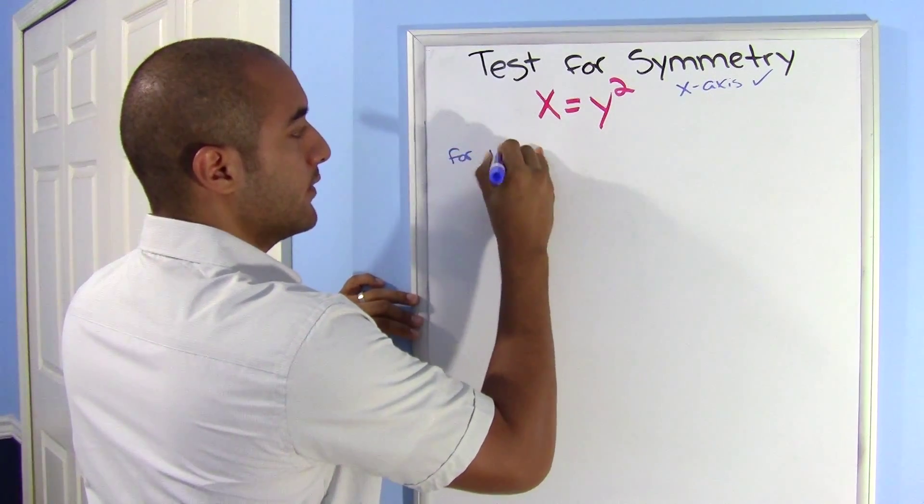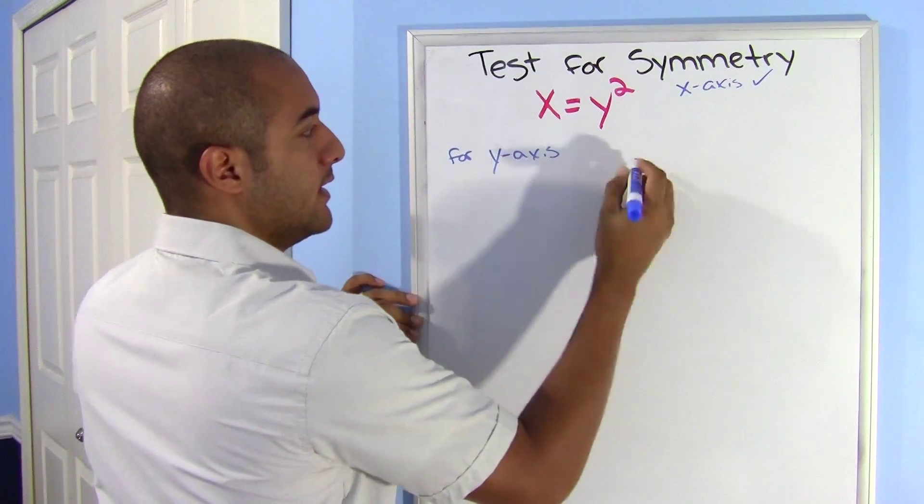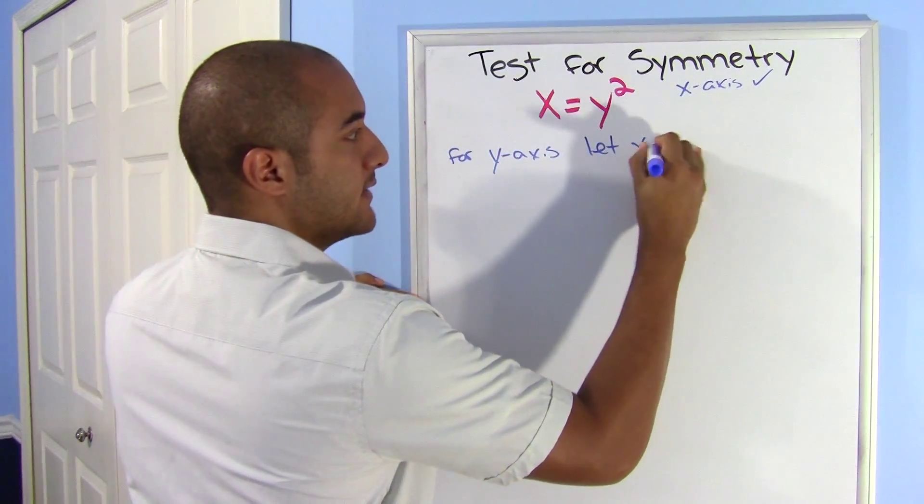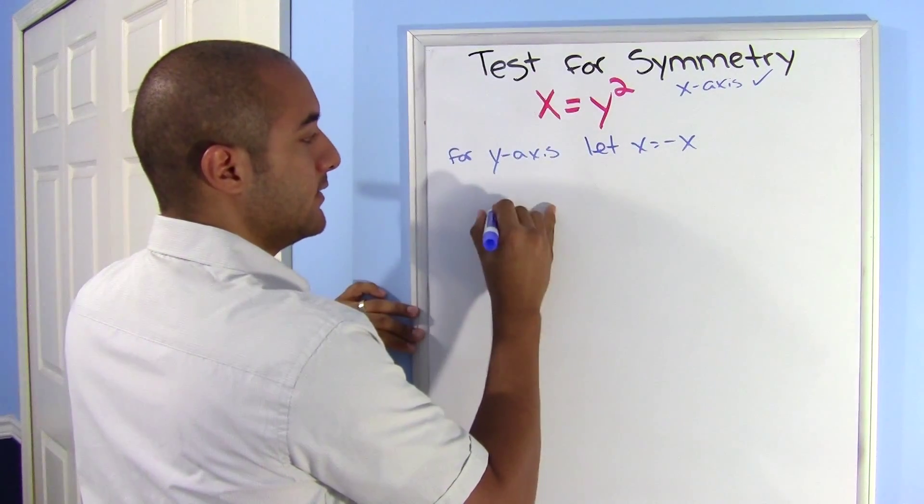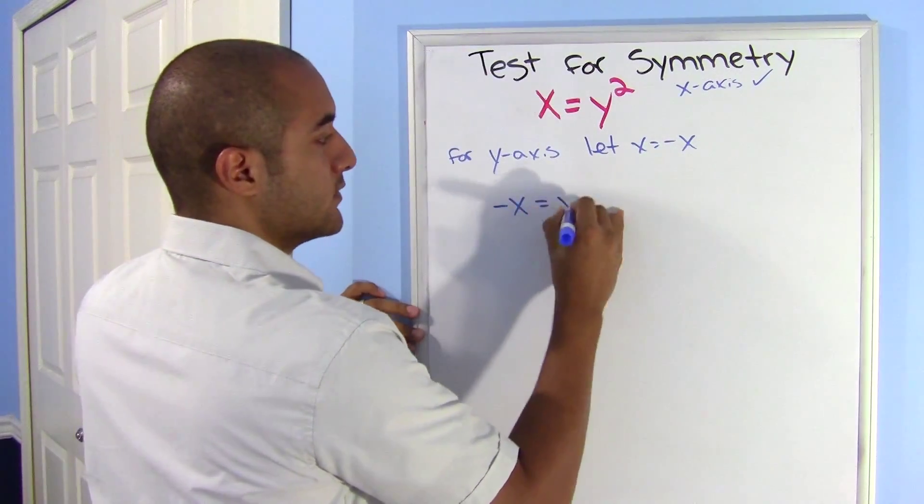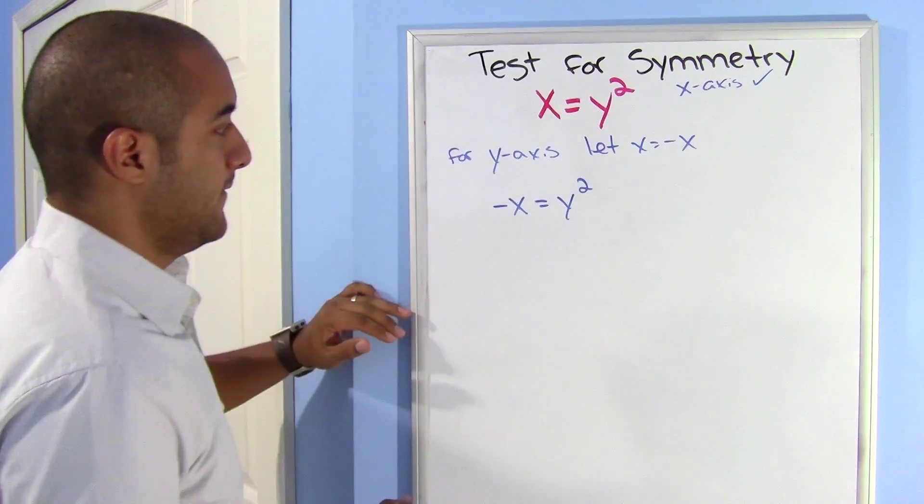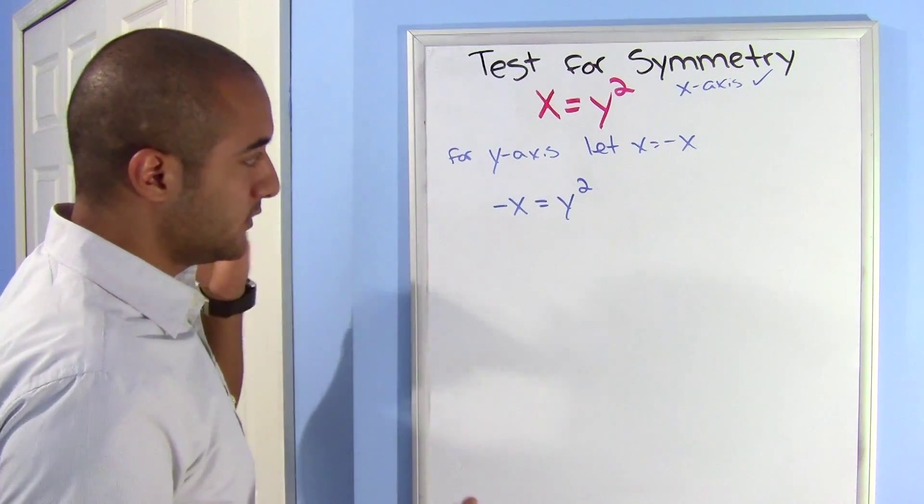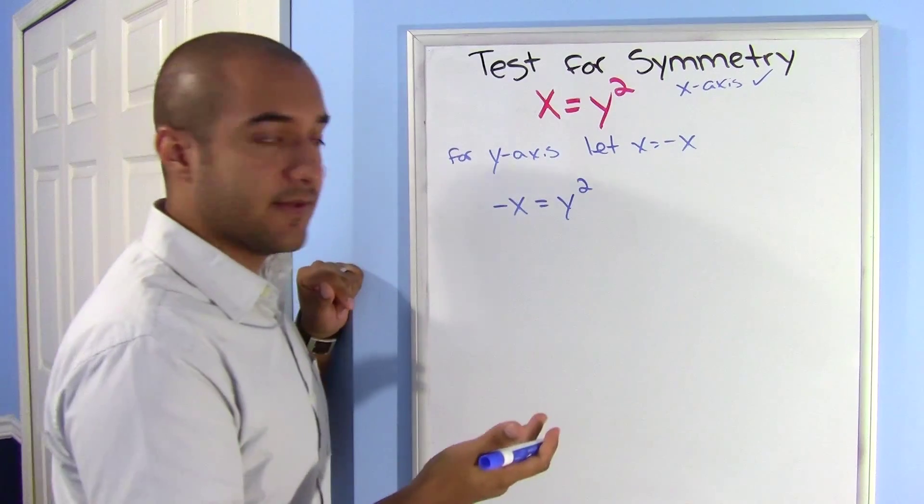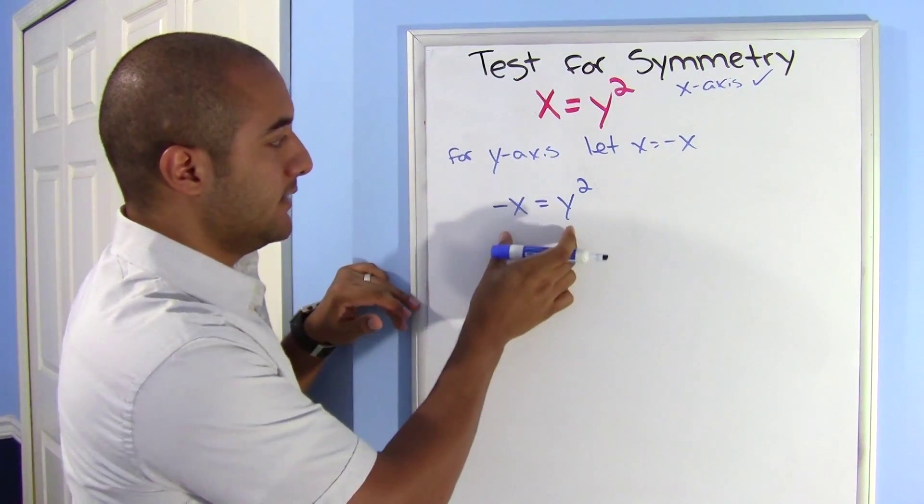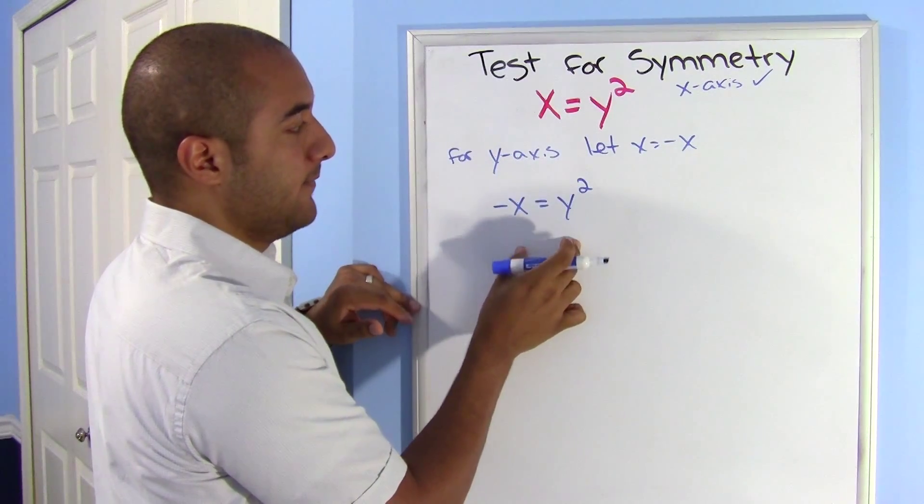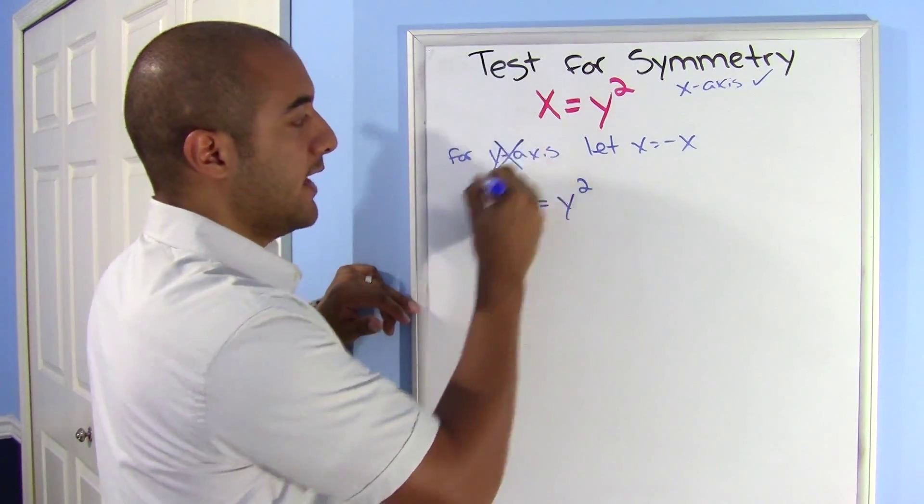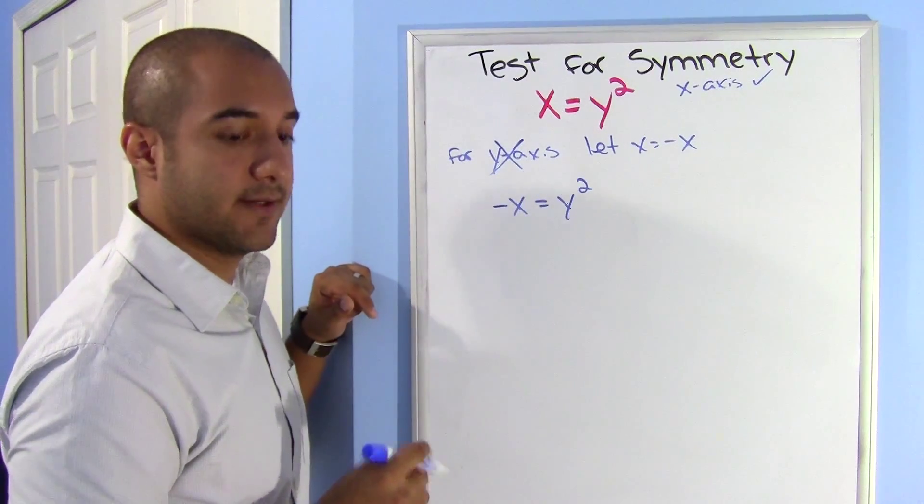So for the y-axis, I let my x equal to negative x. When I put that in, negative x equals y squared. There's nothing I can do. I can't simplify this anymore. Nothing else happens, and I do not have my original equation back. So this is not symmetric about the y-axis.